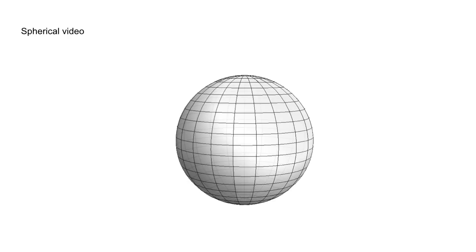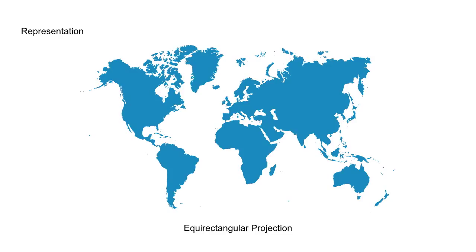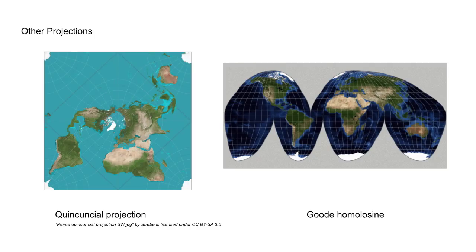What do spherical videos look like? They're essentially a sphere projected onto a flat surface, and we call this method projection. This method has been used for a long time by map makers, because the Earth is a sphere and we like maps on a flat surface. This projection is called equirectangular — it's essentially a sphere unwrapped and flattened out. We want to use projections which are rectangular; non-rectangular ones waste pixels, so we don't use those.